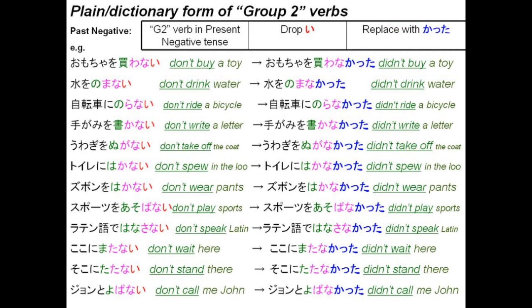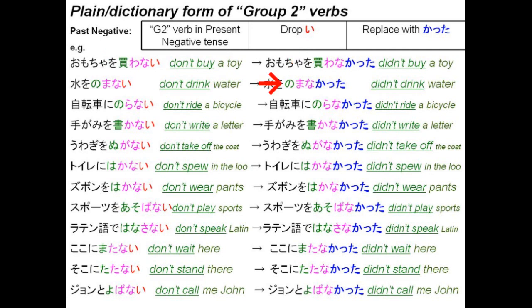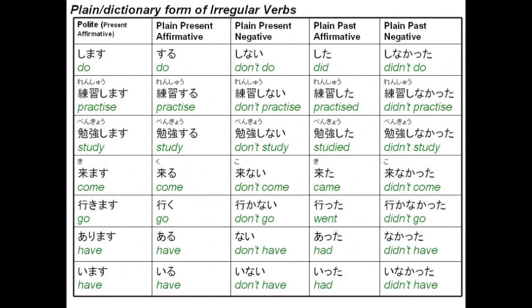To put group 2 verbs into the plain past negative, we follow the same rule as putting it into the plain negative. However, we drop the i and replace it with katta. For example, kawanai — to not buy — becomes kawanakatta — did not buy. Nomanai becomes nomanakatta. Noranai becomes noranakatta. And so on.